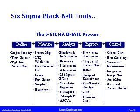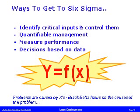One of the key methodologies in Six Sigma is called DMAIC, which stands for Define, Measure, Analyse, Improve and Control. DMAIC is used to improve an existing business process and this graphic shows some of the tools that can be used during these stages. To achieve a Six Sigma level of performance we need to identify the critical inputs and control them. We tend to concentrate on corrective actions we know how to take, not necessarily the problems we should correct. Problems are caused by X's, so focus on the cause of the X's.